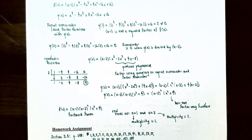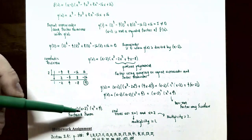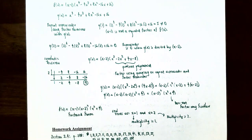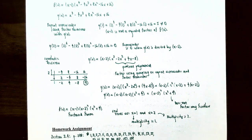The only real zeros are x equals 1 and x equals 2. This finishes our video on finding real zeros of polynomial functions using Descartes' Rule of Signs to determine the number of positive and negative real zeros, and also writing the function in its factored form. If you have questions about any examples or about the homework, please let me know, and I'll see you in the next video when we talk about complex zeros and the fundamental theorem of algebra.